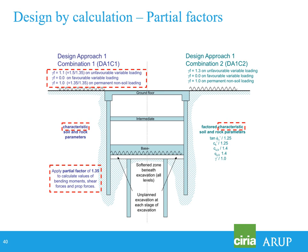Design Approach 1 Combination 2 is a bit more straightforward. You divide your characteristic values by factors of 1.25 for effective stress parameters and 1.4 on total stress parameters. The word 'characteristic' is very important here — all of your design has to come from characteristic parameters. When Eurocode 7 came out this caused massive confusion, because everybody thought it was something new and that they had to go back to school and learn statistics to derive characteristic values.